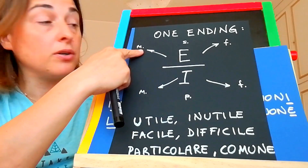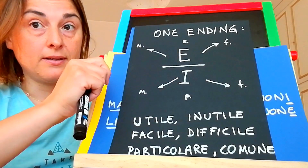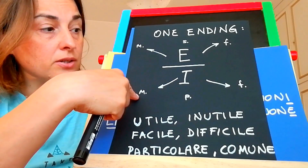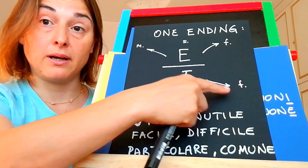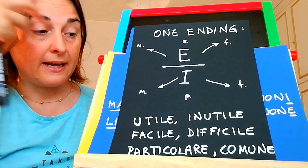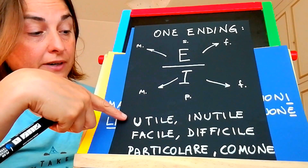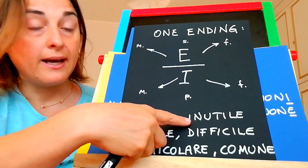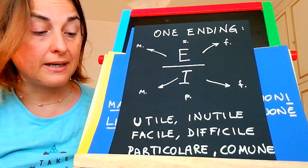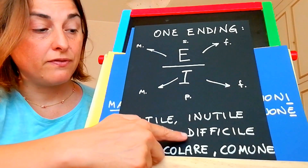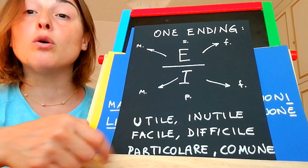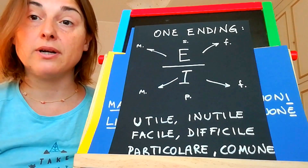We use E for masculine and feminine singular, and we use I for masculine and feminine plural. These are some adjectives that follow this rule. For example, utile and inutile — useful and useless. Facile and difficile — easy and difficult. Particolare and comune — particular and common.